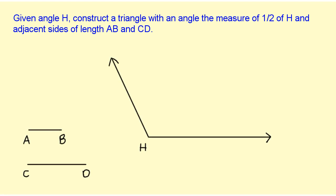Now let's look at another example. This is construction number seven on the construction worksheet for section 4.6. Given angle H, construct a triangle with an angle of one half of H and adjacent sides that measure AB and CD. The first thing we need to do is bisect angle H so that I can get an angle that's half the measure of H.